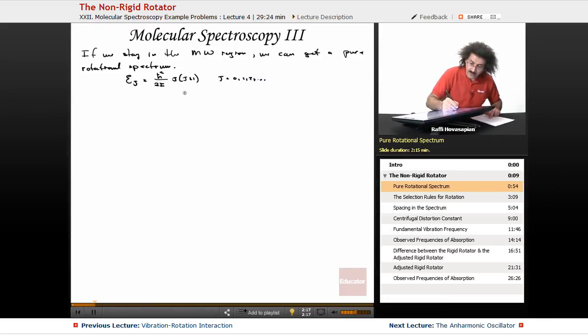I is the rotational inertia, or the moment of inertia, μr². And the degeneracy of these rotational states is 2J plus 1.